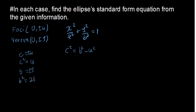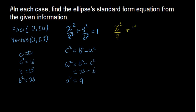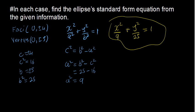Now we make a squared the subject of the formula: a squared equals b squared minus c squared, which is 25 minus 16, giving a squared equals 9. Therefore the standard equation is x squared divided by 9 plus y squared divided by 25 equals 1. For it to be an ellipse, the right-hand side must equal 1, and that's how we answer that question.